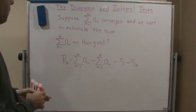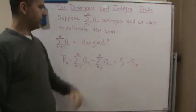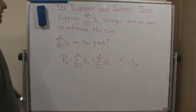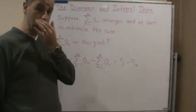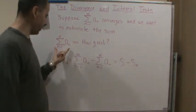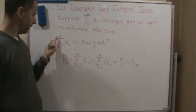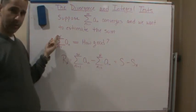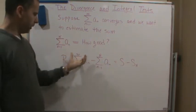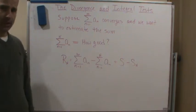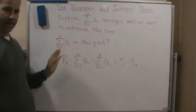Let's say we have a series that converges, and we want to estimate what the sum is. We could do that easily for some n, the integer capital N. But the question becomes: how good is that estimate?